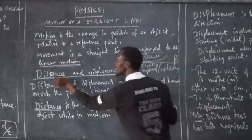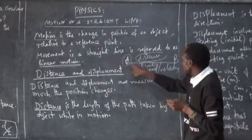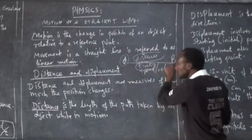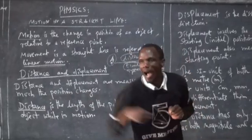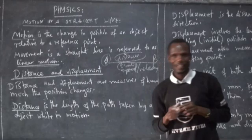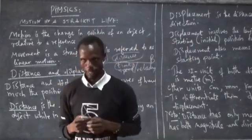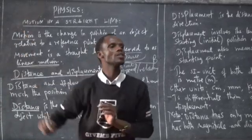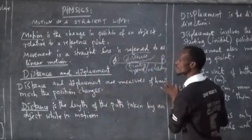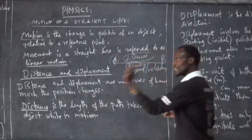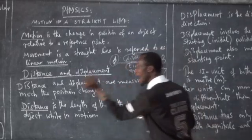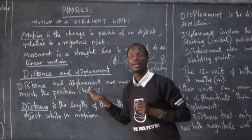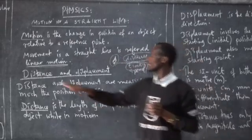And that is why we have distance and displacement. Moving from point A to point B, the length of the path you used to travel from A to B is called distance. When moving from here to town, you may decide to go one way or another way — the length of the path taken during your journey is called distance. Distance and displacement are measures of how much position changes.